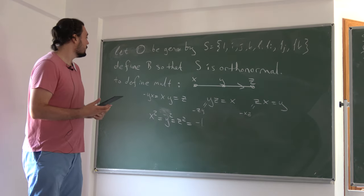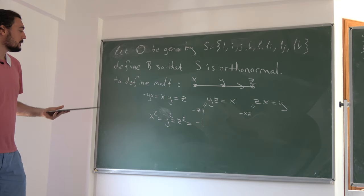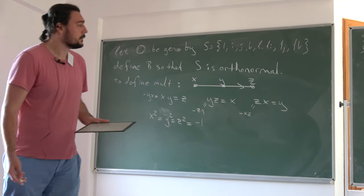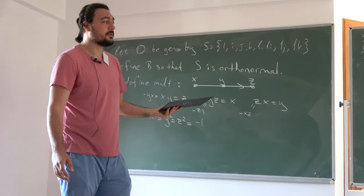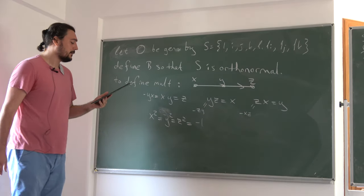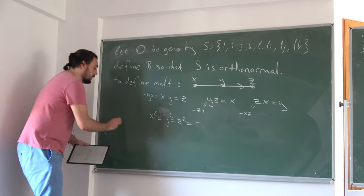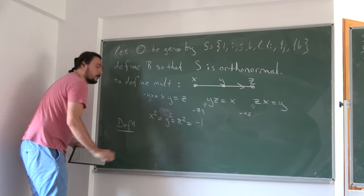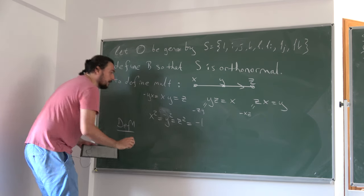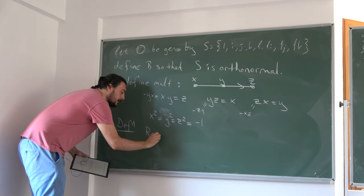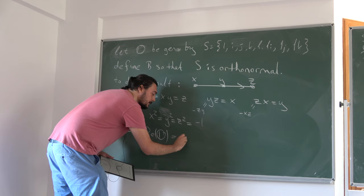This conjugation implies something useful: if you take Ū·U and conjugate the whole thing, you get Ū·U again, which means Ū·U must be a real element. Another exercise shows that the inner product can be expressed as the real part of Ū·V. This allows us to define G2.